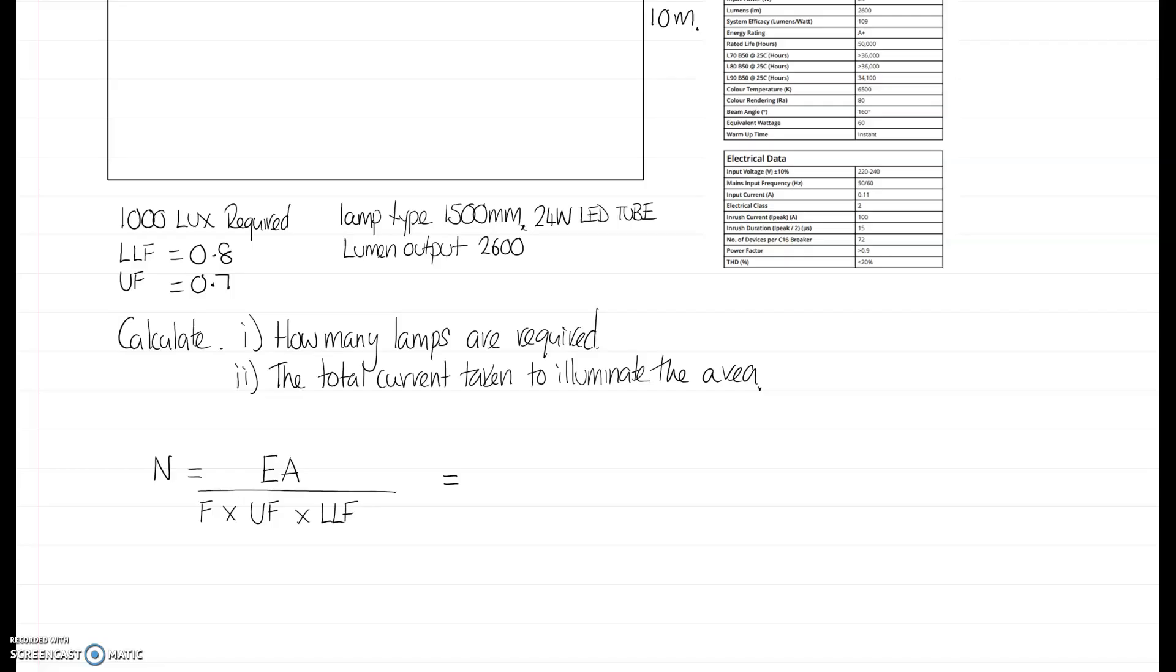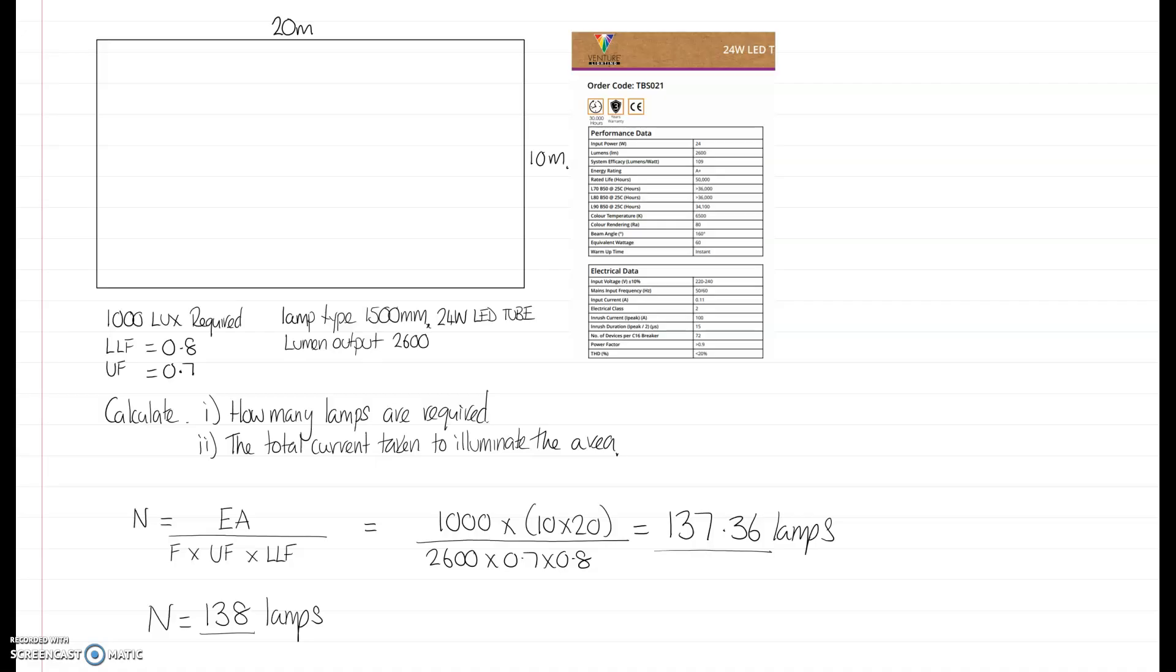We've got our formula. The illuminance required is 1,000, the area is 10 metres by 20 metres, and the lumen output per light is 2,600. The utilisation factor is 0.7, and the light loss factor is 0.8. So the total number of lights, we do the maths. That's 137.36 lamps, or 138 lamps. So what that means is we would need to divide this floor area. We would space out that floor area to put multiple rows of lights.